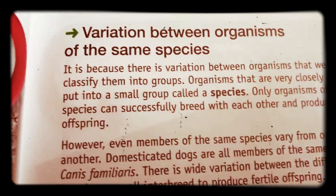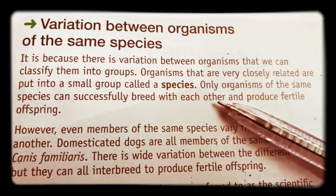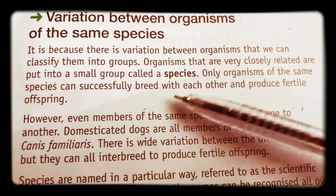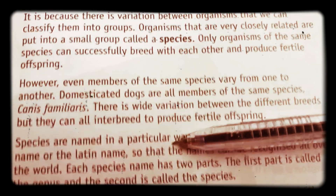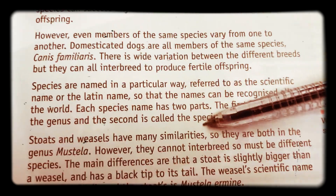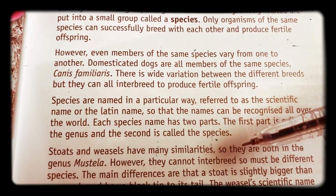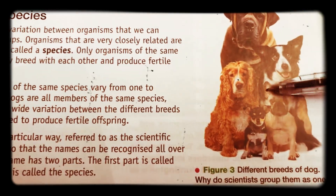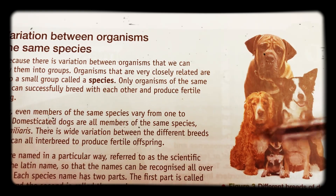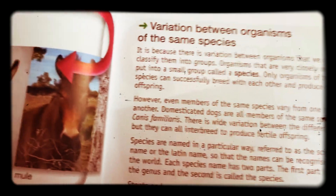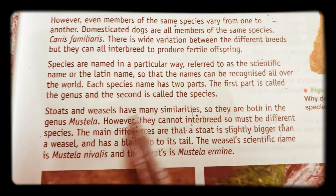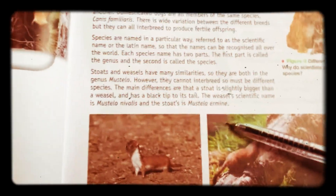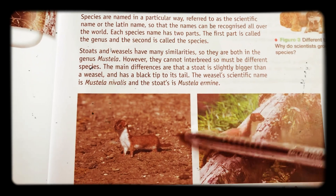We started thinking about species. Make sure you know what the word 'species' means. They are organisms that are very closely related — they belong to small groups called species. Members of a species can successfully breed with each other and produce fertile offspring. But if you have different species breeding together, they will produce offspring, but the offspring will not be able to have offspring themselves. You can have different members of the same species and variation within the same species. There's wide variation between different breeds of dogs, for example.